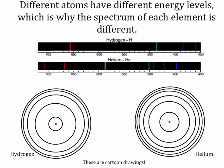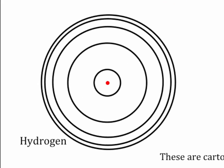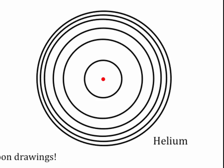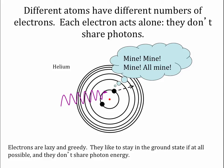Different atoms have different energy levels. Hydrogen, with one electron, has one set of energy levels, while helium on the right has a different set — because helium has two protons instead of one and two electrons that are both jumping around. So a helium spectrum will have emission and absorption lines at different wavelengths than the hydrogen spectrum. Atoms with more than one electron do not share photons between electrons. So even complicated atoms like uranium, which has 92 electrons, have a very specific set of absorption and emission lines.